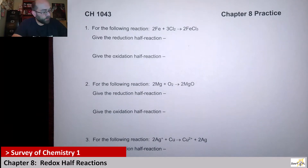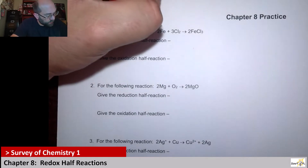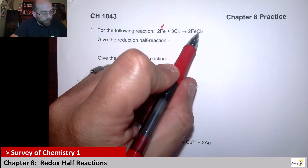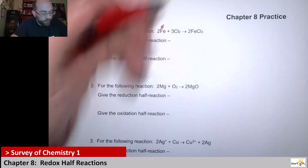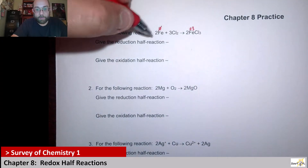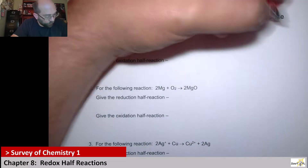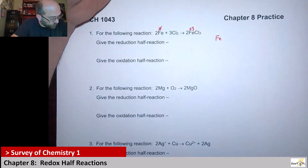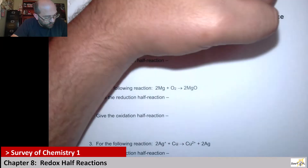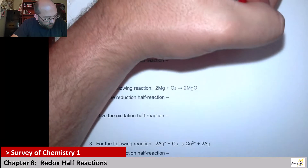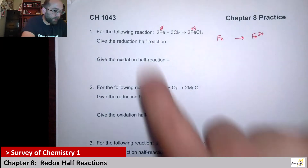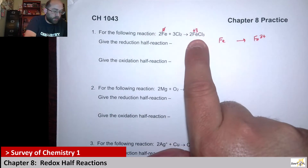First, when we look here, we have iron. It starts with iron zero and then based off of it being paired with three chlorines, it becomes a three plus. So if we were to write out the stuff that happens with iron, we would get iron on the reactant side and then iron three plus on the product side. It looks like iron lost electrons.